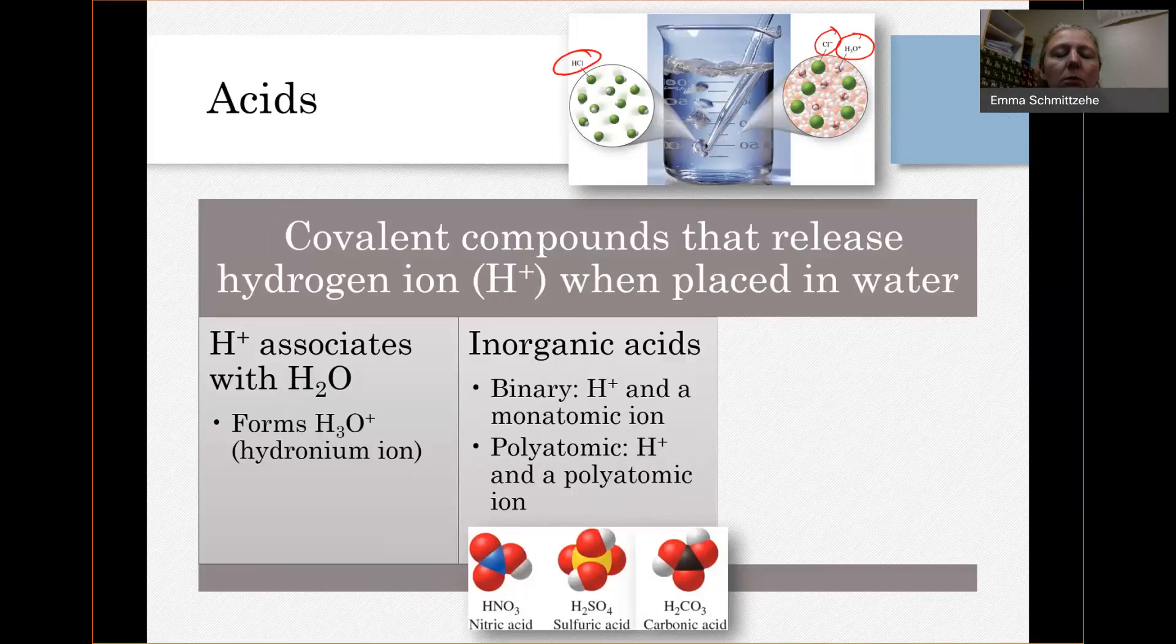So HCl, what's in that top diagram, that's an example of a binary inorganic acid. It just consists of hydrogen and chlorine. It splits up, and the monatomic ion that's left over is chloride.